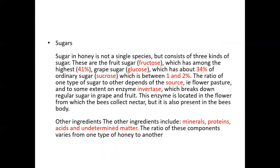Sugar in honey is not a single species but consists of three kinds: fructose (fruit sugar) at about 41%, glucose (grape sugar) at about 34%, and sucrose at 1–2%. The ratio of one type of sugar to another depends upon the flower source and the invertase enzyme. This ratio depends on which flower the bee is sucking nectar from and how much the bee's invertase enzyme converts the nectar into fructose and glucose.